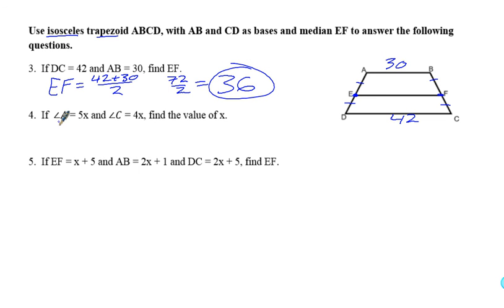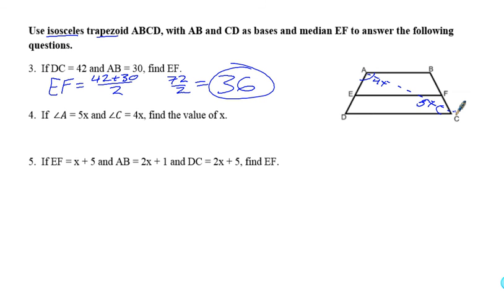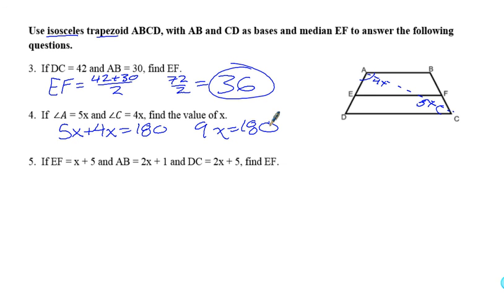For the next problem, angle A = 5x and angle C = 4x; find the value of x. Since this is an isosceles trapezoid, opposite angles are supplementary, so these two angles add up to 180. We get 9x = 180, divide both sides by 9, and x = 20.